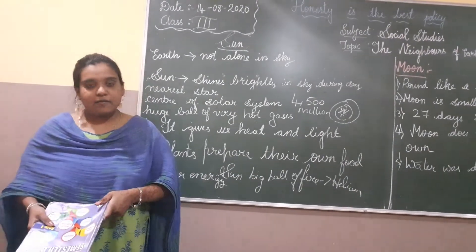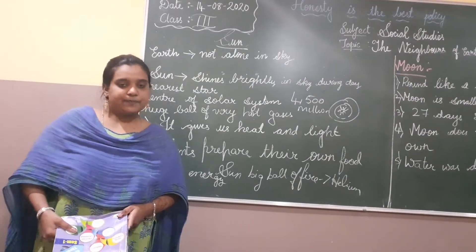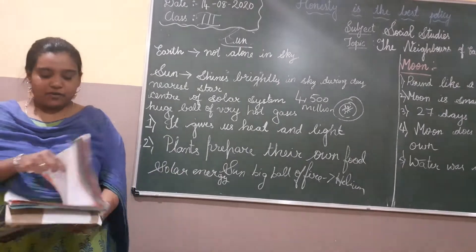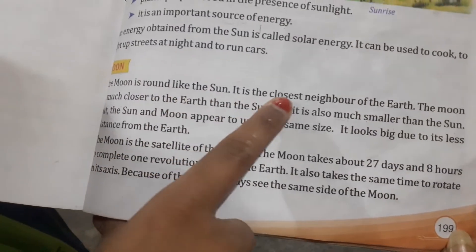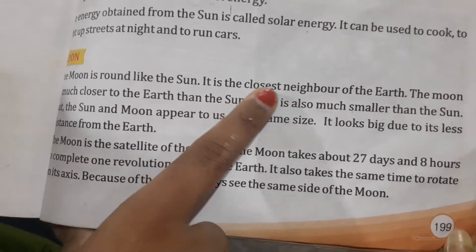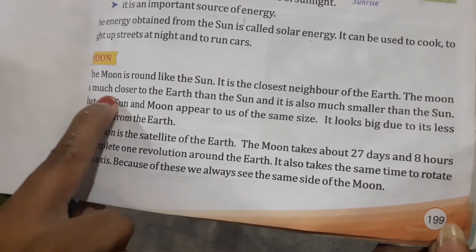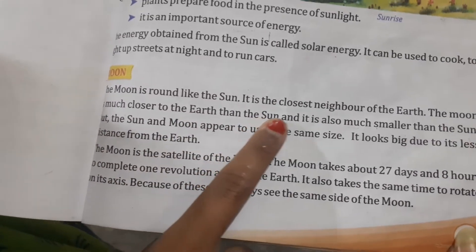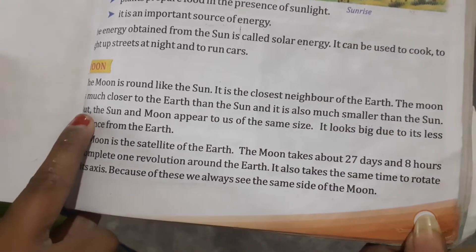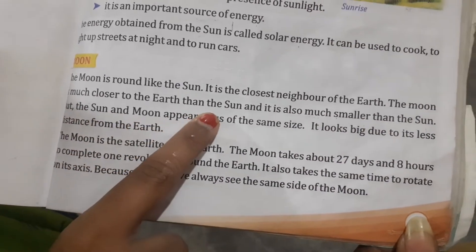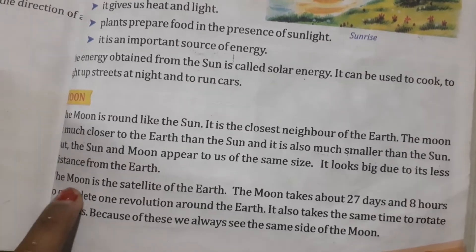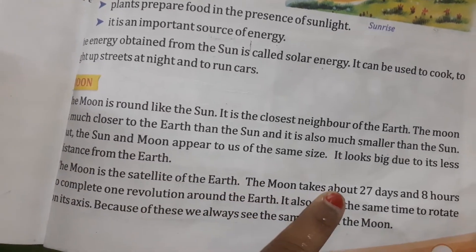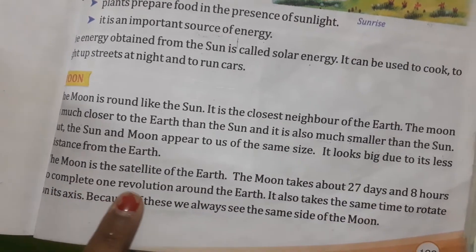Solar cookers work with the help of solar energy. Now we will come to the moon. The moon is round like a ball. It is the closest neighbor of the earth. The moon is much smaller than the earth, and also much smaller than the sun. The moon is a satellite of the earth. The moon takes about 27 days and 8 hours to complete one revolution around the earth.